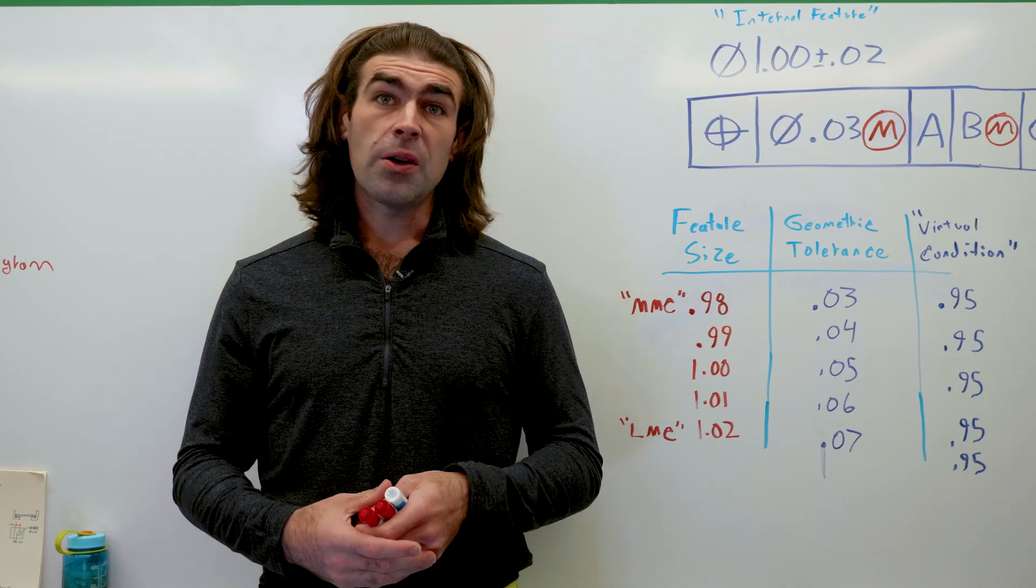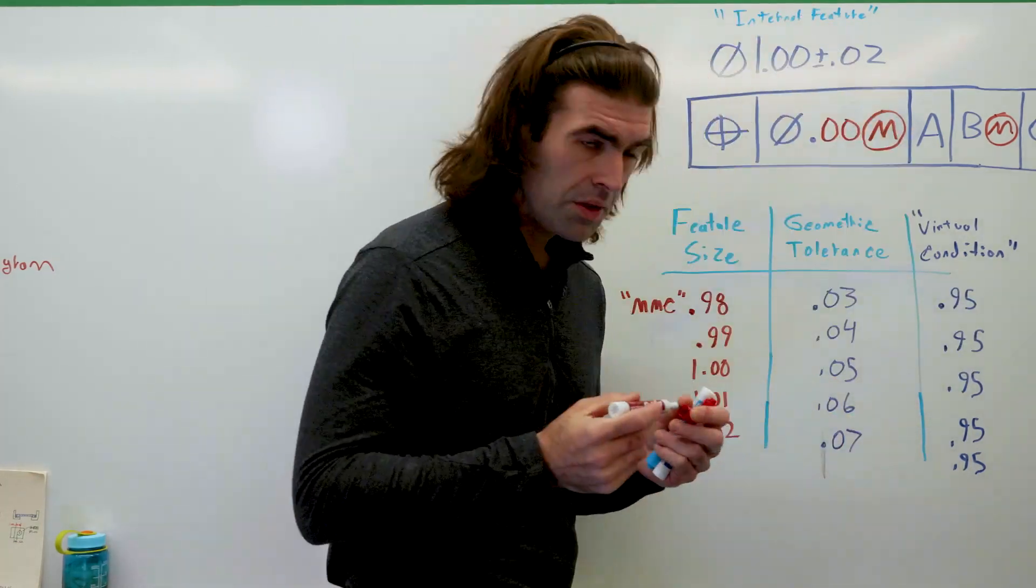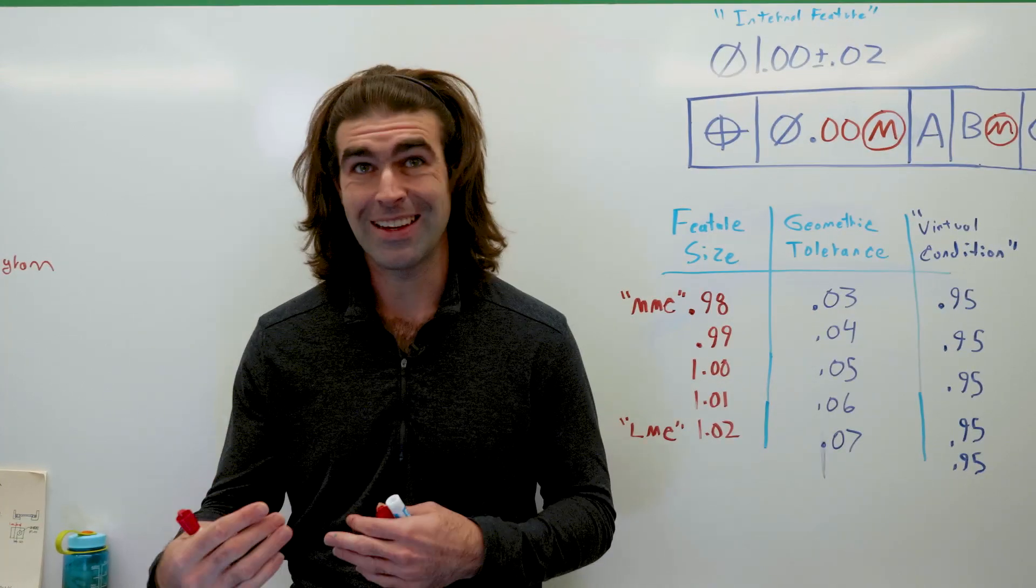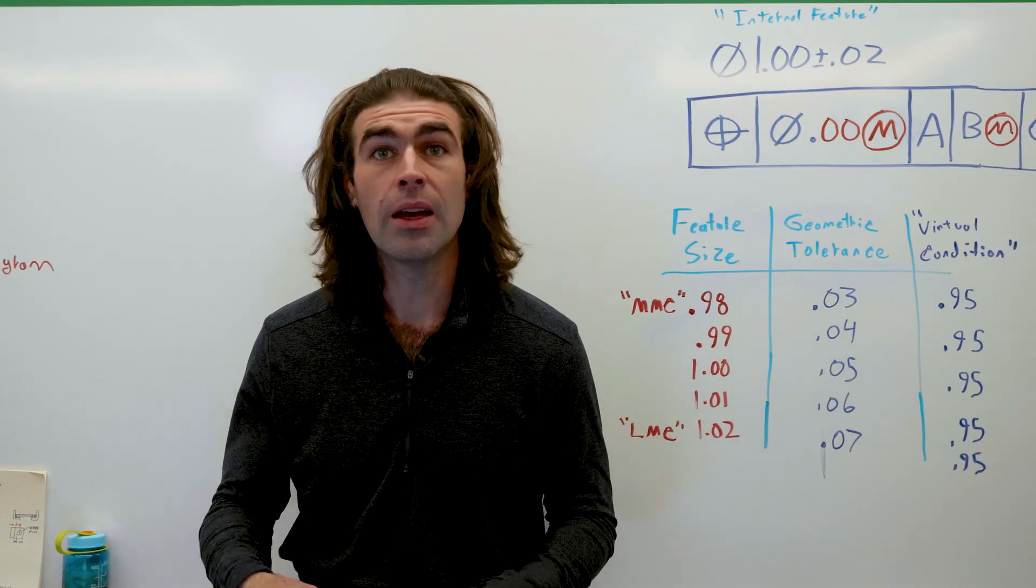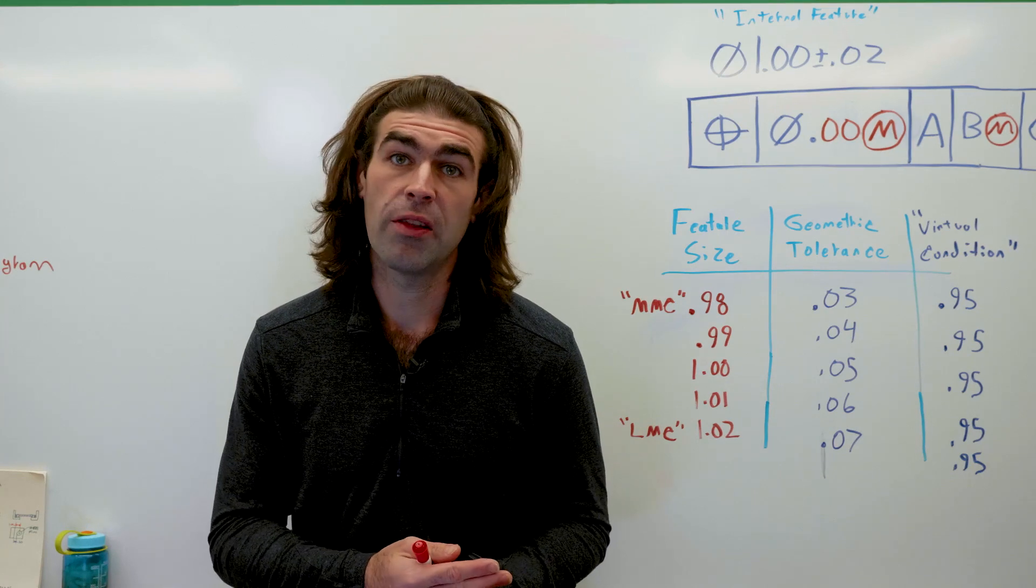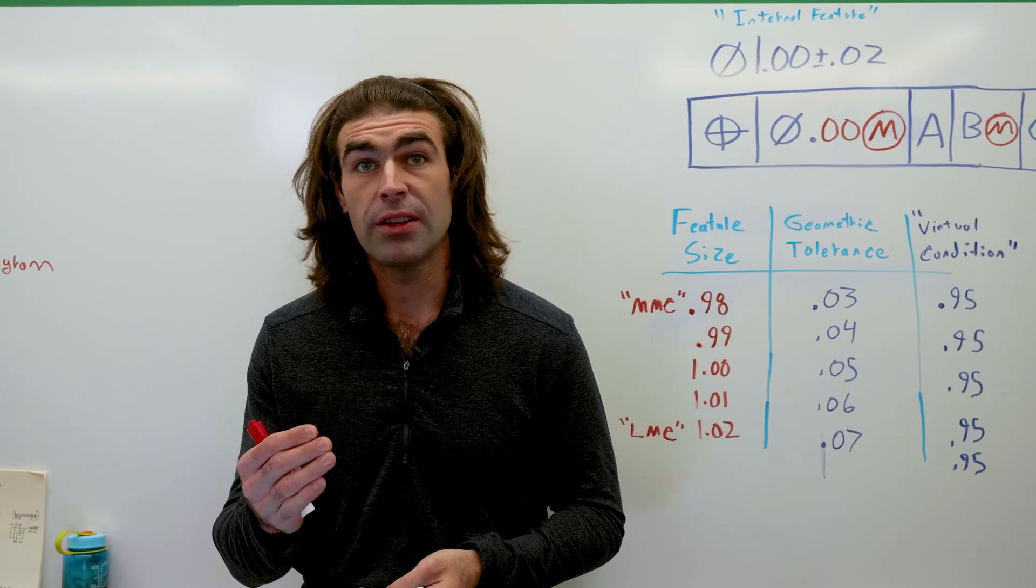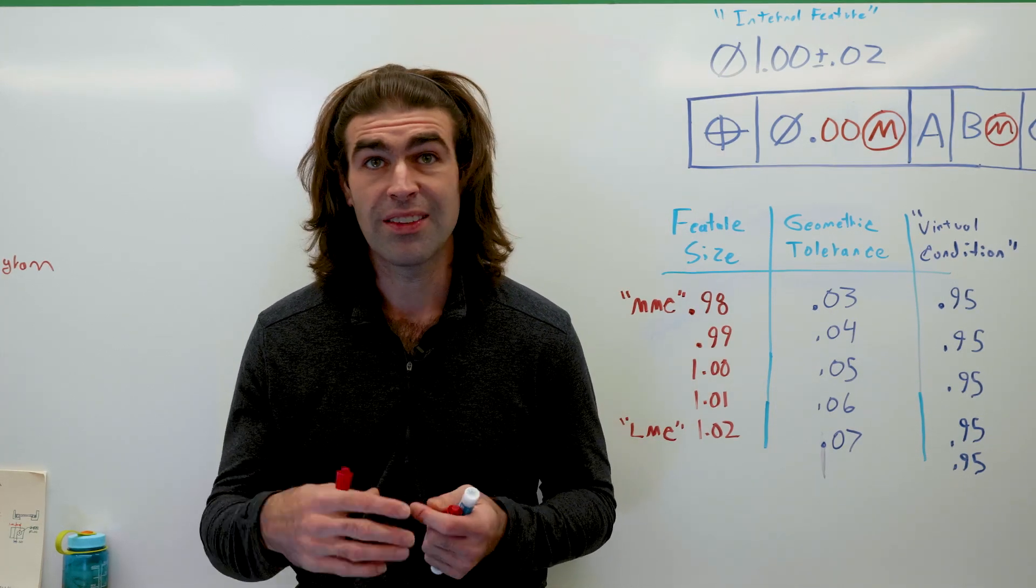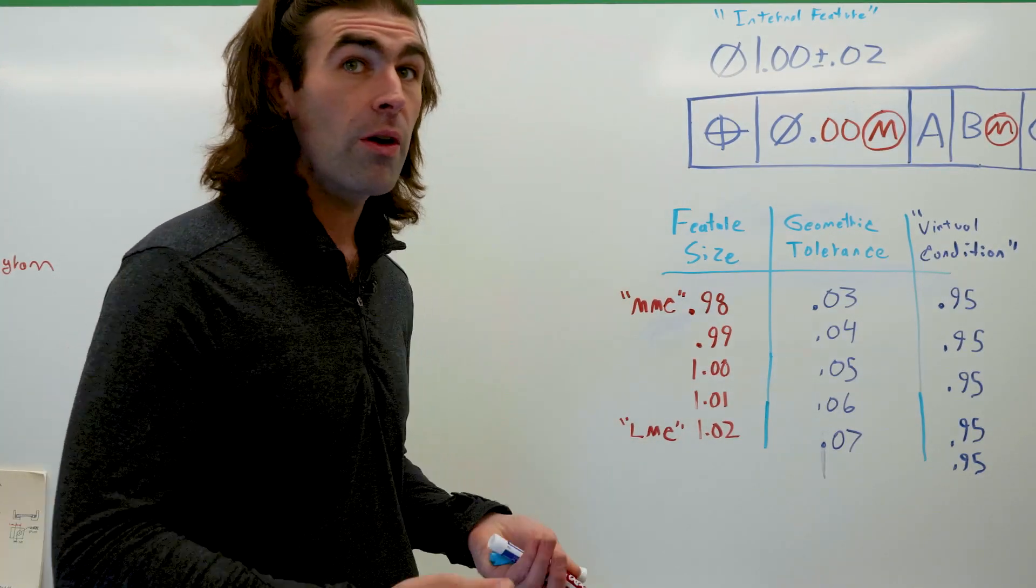So next while we're here, let's talk about zero at MMC. Now this freaks people out when they see it on a drawing. You got bagels in the feature control frame. You get phone calls. People say, you know, there's no tolerance on this part. This is impossible to make. We can't make anything perfect. You know, didn't you read the GD&T handbook? Well, what zero MMC is saying is that at MMC, there is no tolerance available, but as we just saw here, you get more tolerance as the feature gets larger in the case of a hole. So the entire positional tolerance is tied to the size of the unrelated actual mating envelope, the size of a hole. So let's do the chart for the zero at MMC.